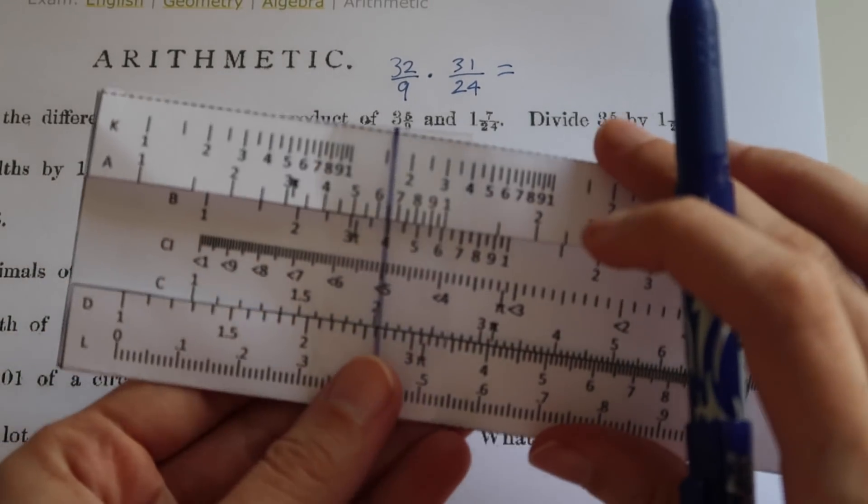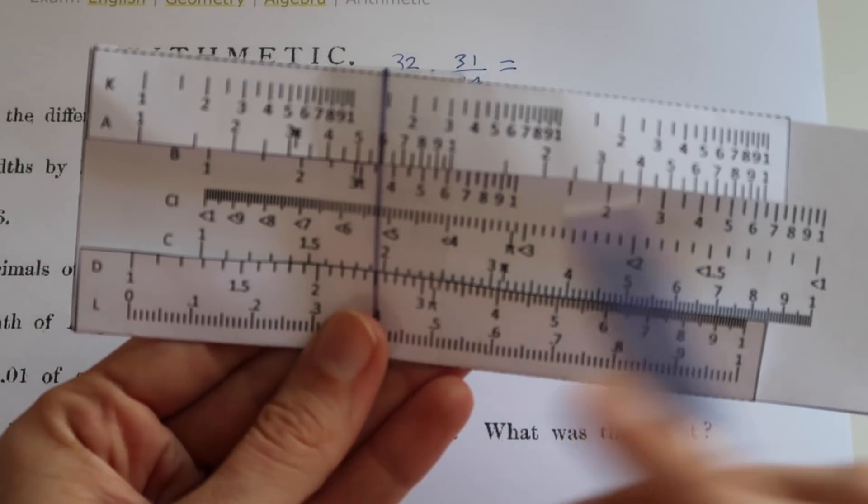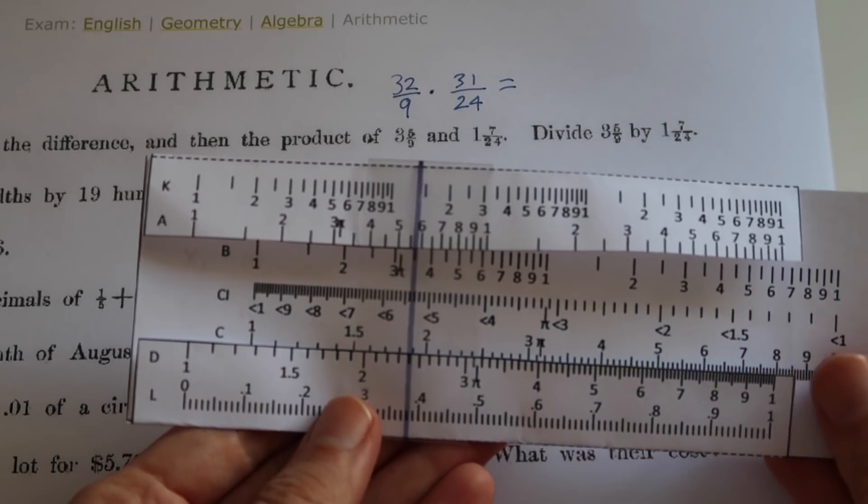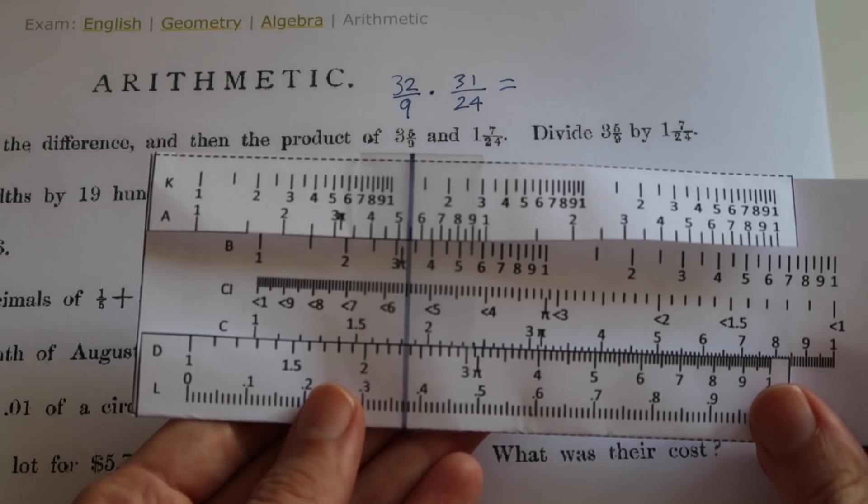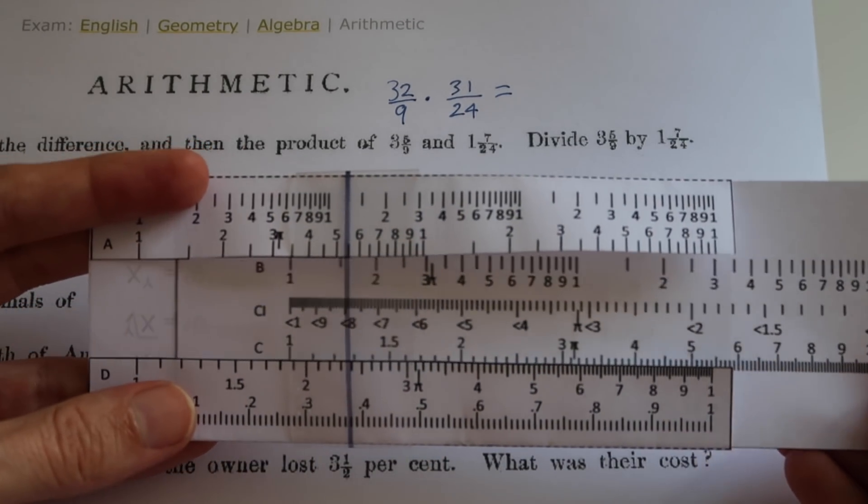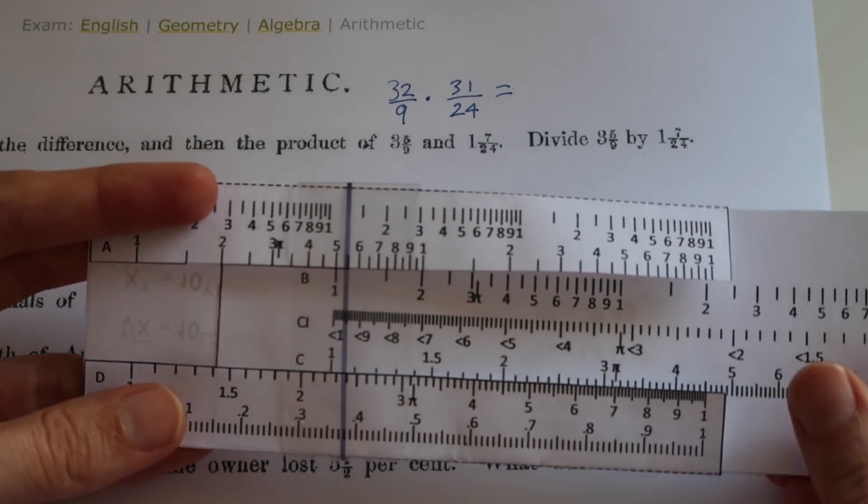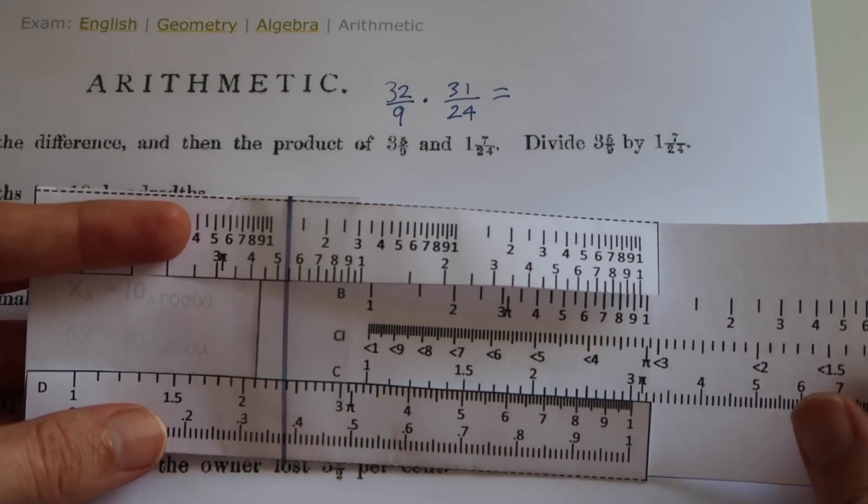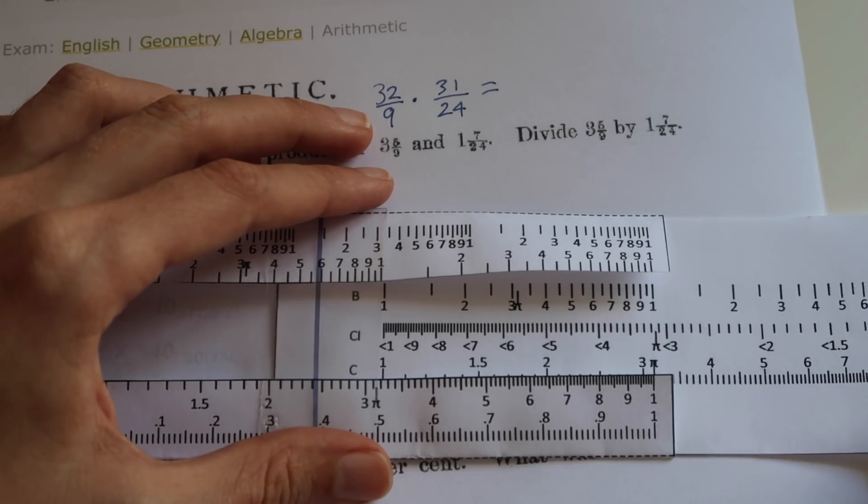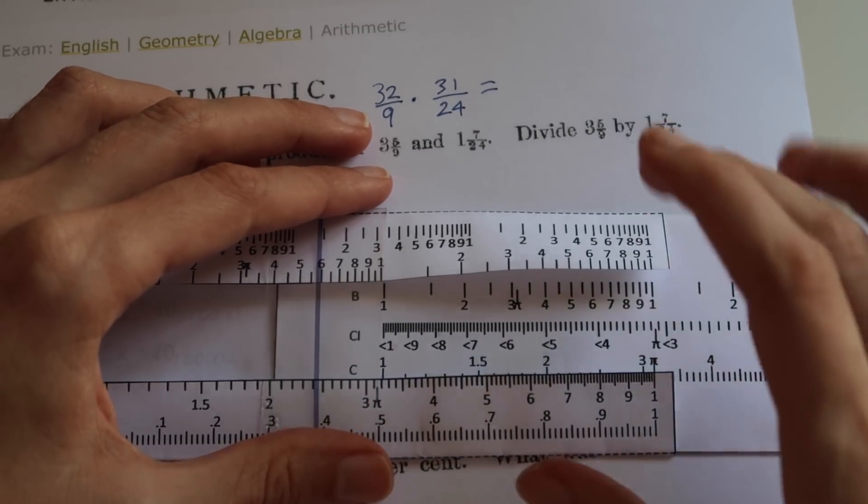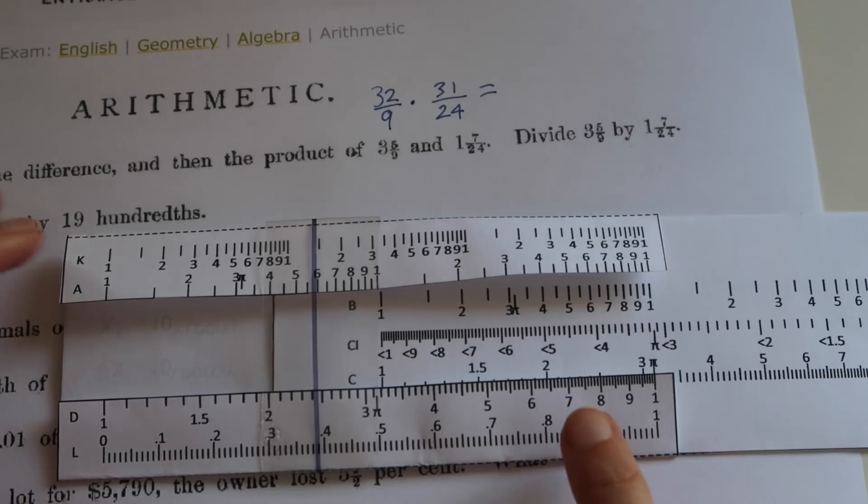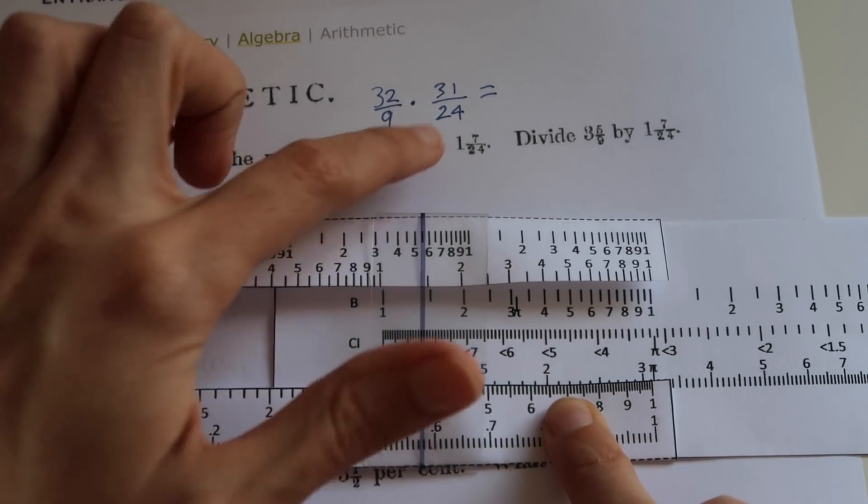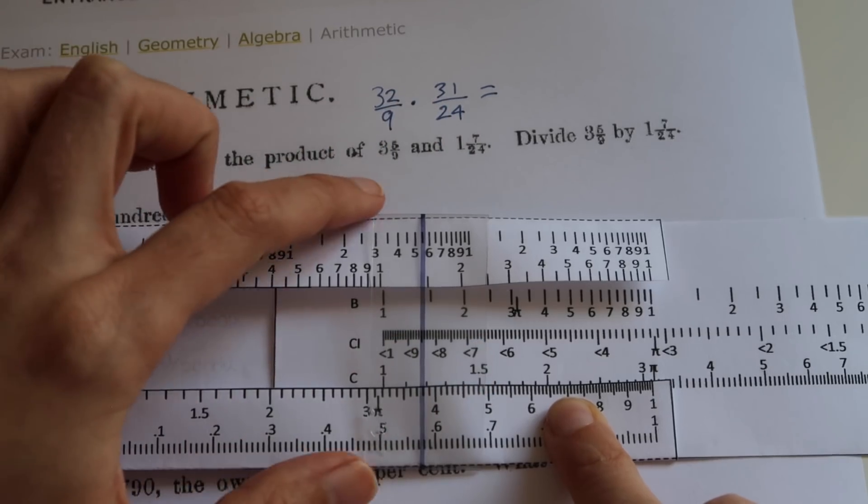We're going to take the 1 on the C scale and slide it along to the first number that we're multiplying. All the numbers need to be less than 10, so we're actually going to slide this 1 along to 3.2 and then deal with fixing our decimal places later. So I've got my 1 on 3.2 there, and then we're going to take this plastic slider and slide it across to the second number that we're multiplying, which is 31.